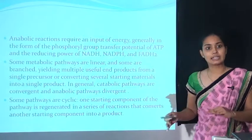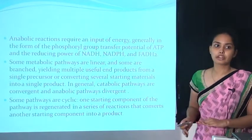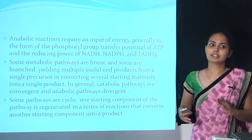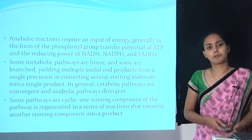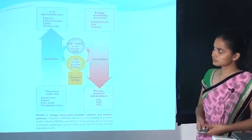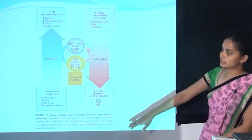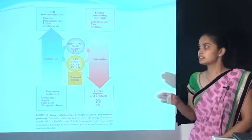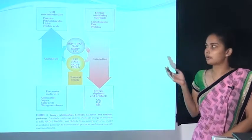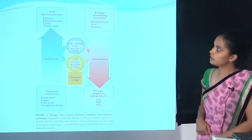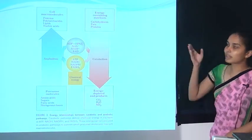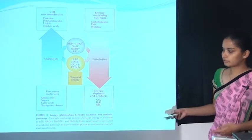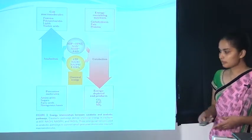Some pathways are cyclic — one starting component of the pathway is regenerated after a series of reactions that converts another starting component into a product. In anabolism, from smaller molecules such as amino acids, sugars, and other building blocks, larger cell macromolecules are formed. In catabolism, from the larger macromolecules, smaller micromolecules are formed.